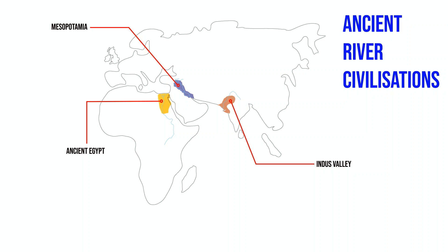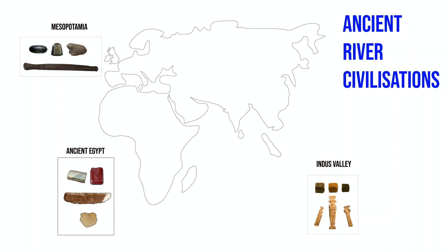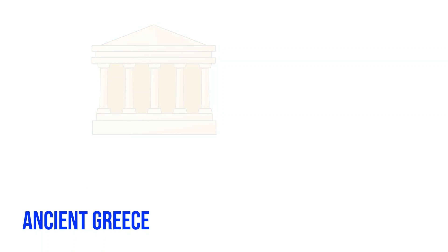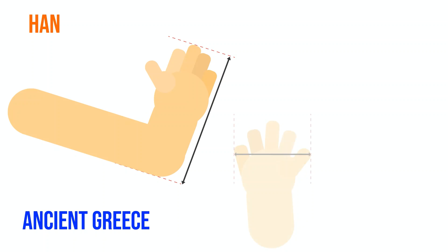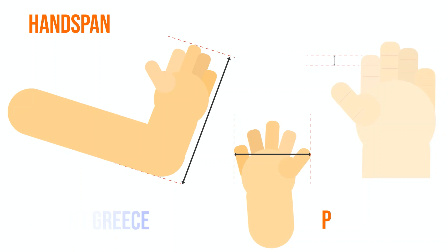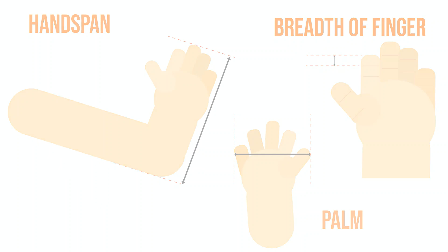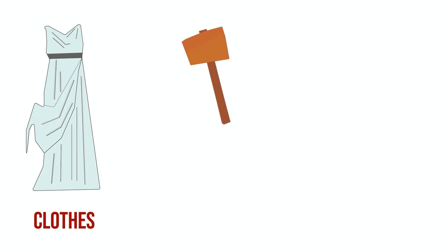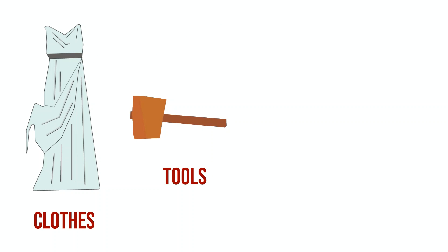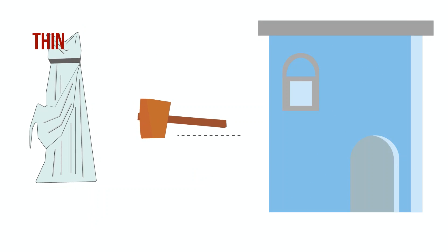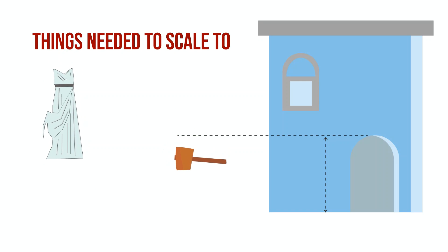Our ancestors tried many different methods to standardize mass, length, and time. Ancient Greeks used different body parts to measure lengths, such as hand span, palm, and breadth of a finger, which made sense as most daily life things such as clothes, tools, and houses needed to scale to an individual's size.